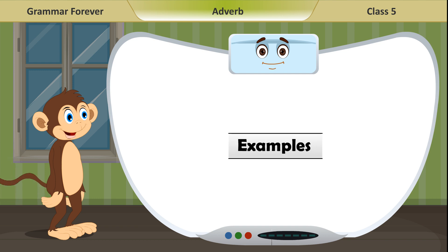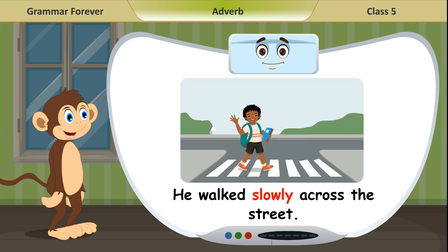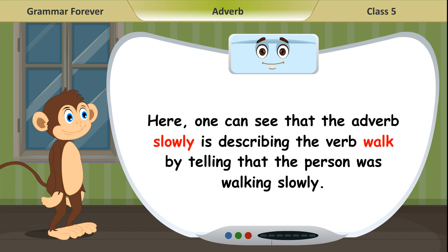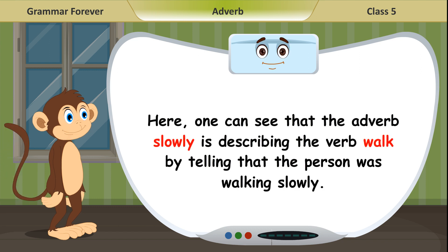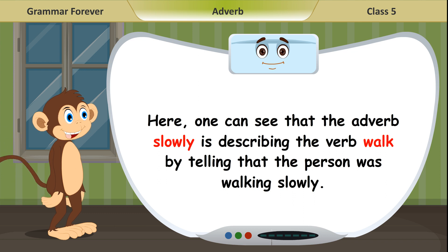Example: He walked slowly across the street. Here, one can see that the adverb 'slowly' is describing the verb 'walk' by telling that the person was walking slowly.